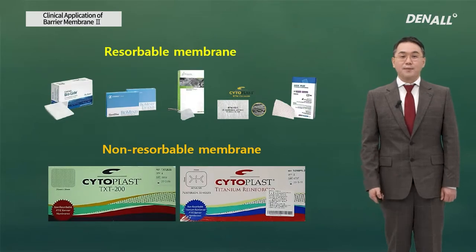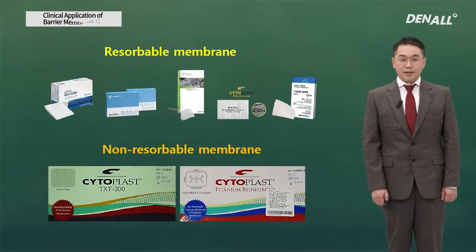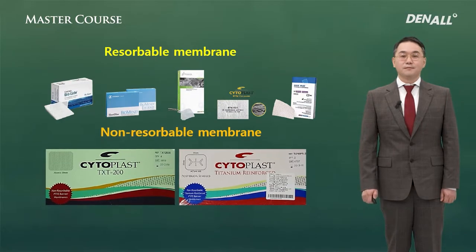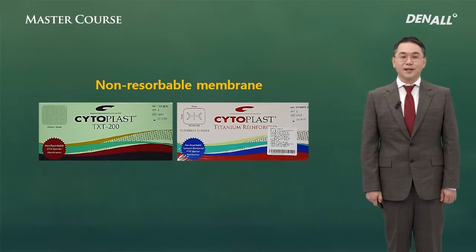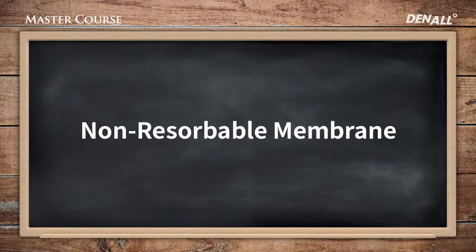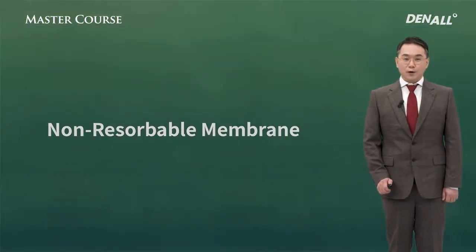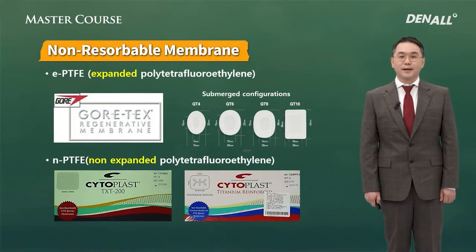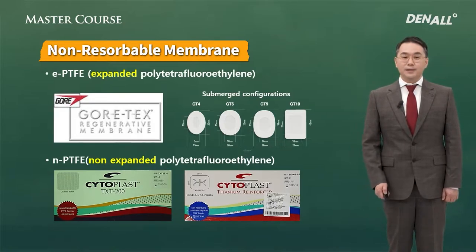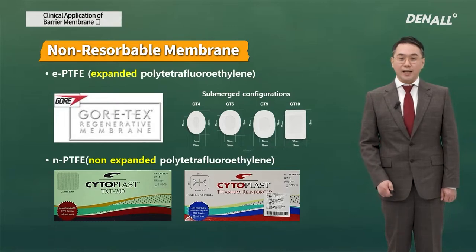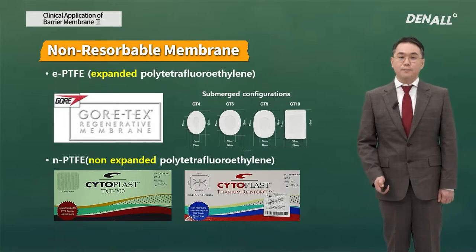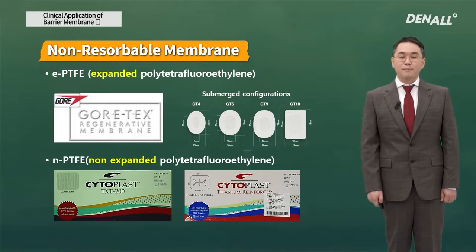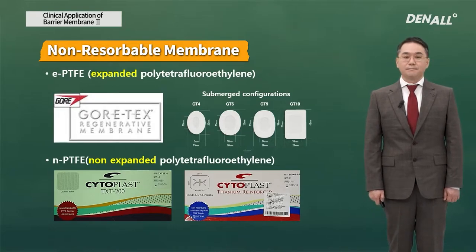As I mentioned in the first lecture, there are two types of membrane. Today I'm going to talk about the non-resolvable membrane. Non-resolvable membrane uses one material — polytetrafluoroethylene, which is a synthetic resin. Depending on how it is treated, there are two types: whether it is expanded or non-expanded — expanded PTFE membrane and non-expanded PTFE membrane.